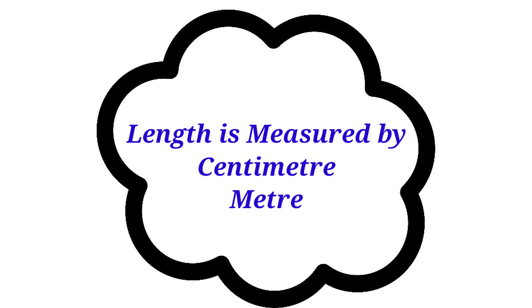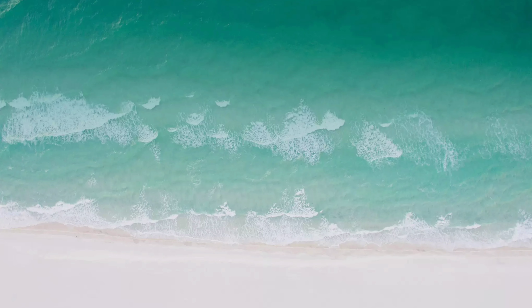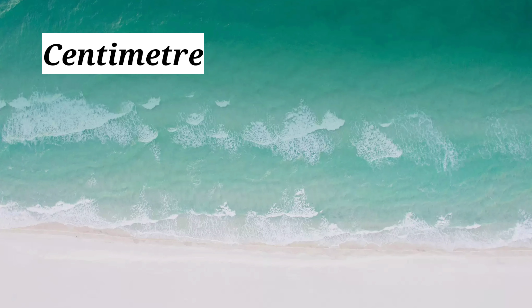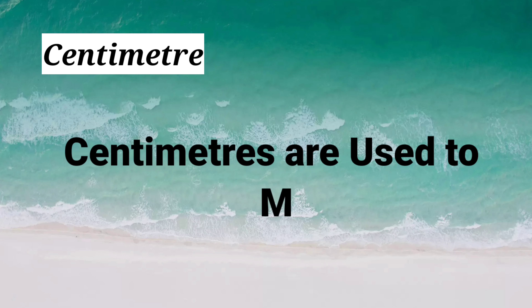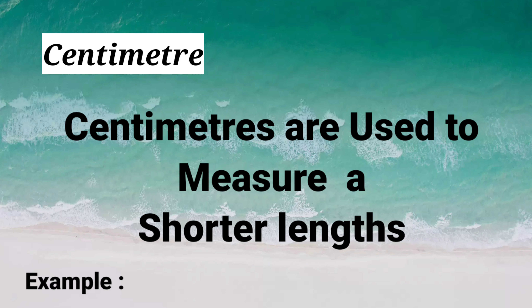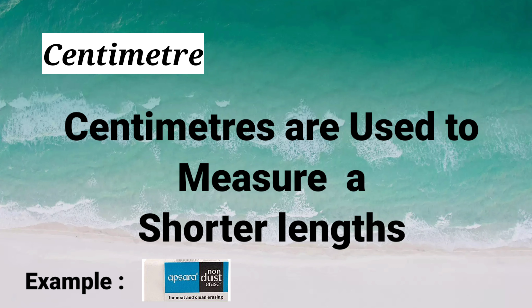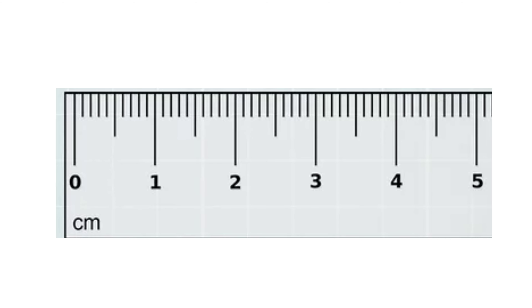Length is measured by centimeter and meter. Centimeters are used to measure a shorter length. For example, an eraser. Look at this scale. The scale has markings for millimeters and centimeters. The small markings are used for millimeters, and the big markings are used for centimeters.